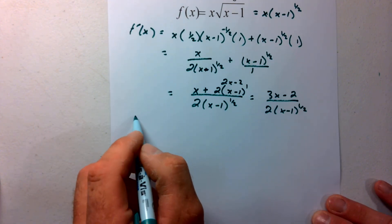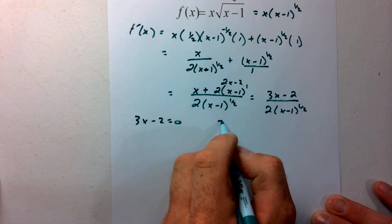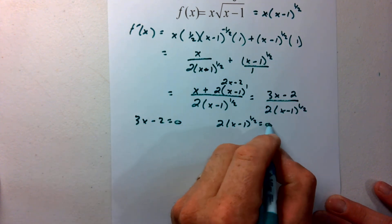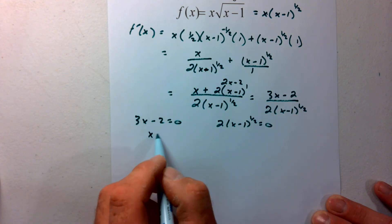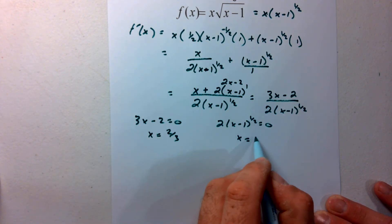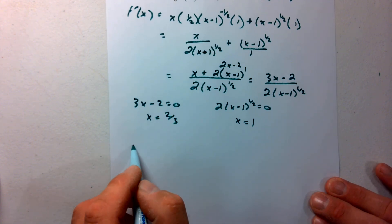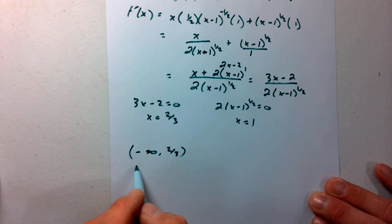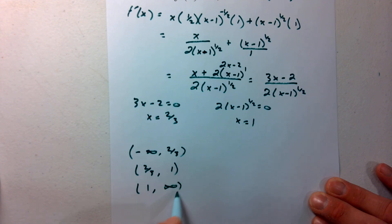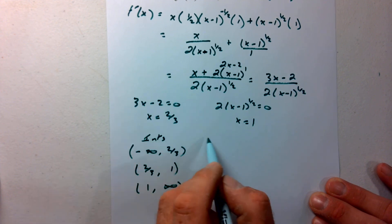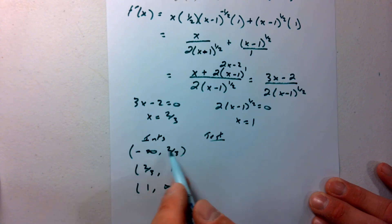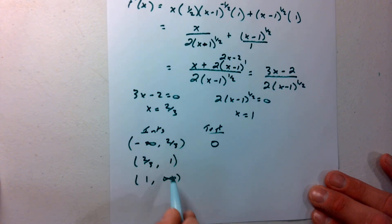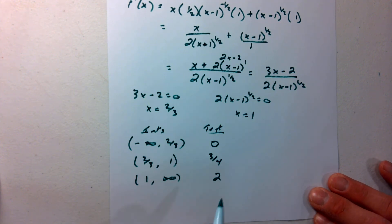Setting the numerator 3x minus 2 equal to zero gives x equals two thirds. Setting the denominator 2 times (x minus 1) to the one half equal to zero gives x equals 1. So my intervals are negative infinity to two thirds, two thirds to 1, and 1 to infinity. Test values: 0, three fourths, and 2.